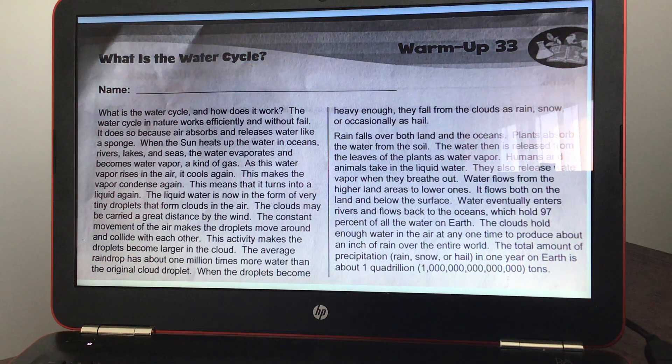As this water vapor rises in the air, it cools again. This makes the vapor condense again. This means that it turns into a liquid again. The liquid water is now in the form of very tiny droplets that form clouds in the air.